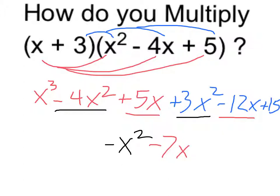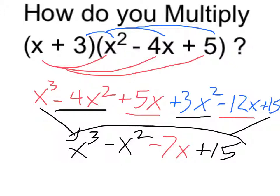The first and last terms can't be combined with anything. So this is simply going to come down as x cubed, and the last term comes down as a plus 15. So overall, I have x cubed minus x squared minus 7x plus 15.